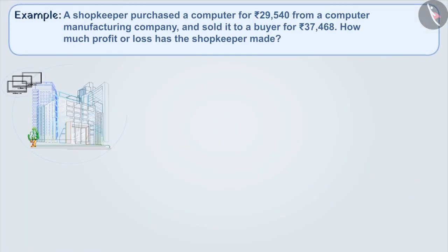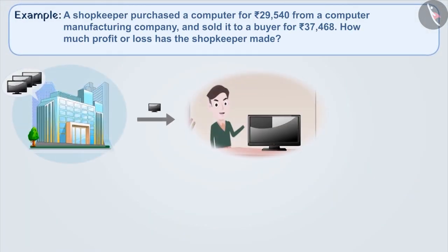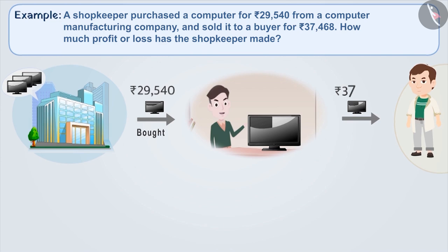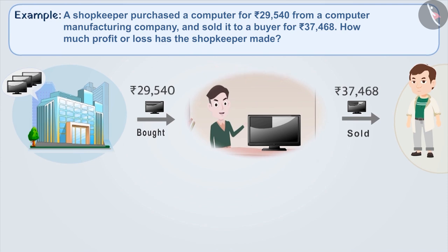From a computer manufacturing company, a shopkeeper purchased a computer for Rs. 29,540 and sold it to a buyer for Rs. 37,468. How much profit or loss is made by the shopkeeper? Since the shopkeeper purchased the computer for Rs. 29,540, this is his cost price.